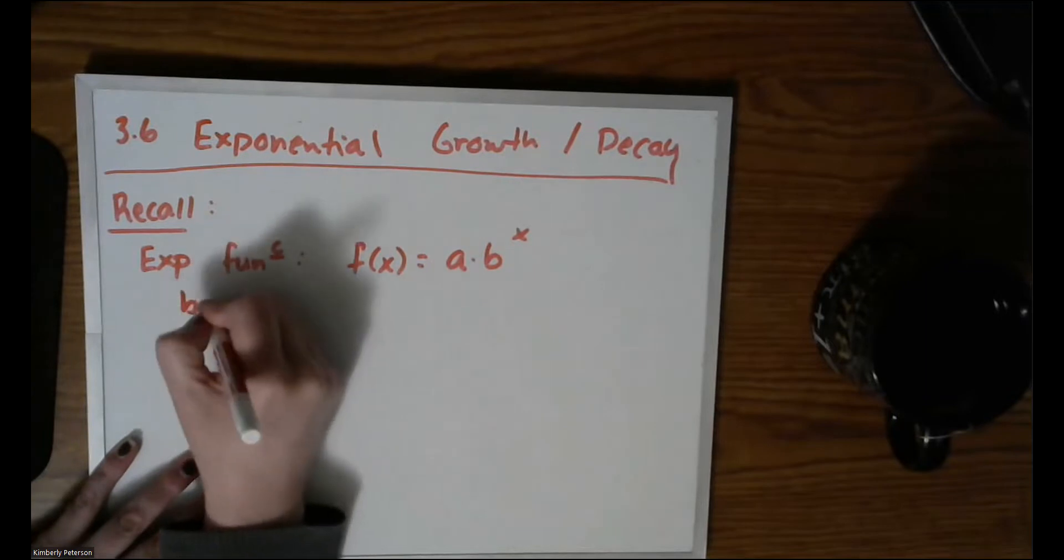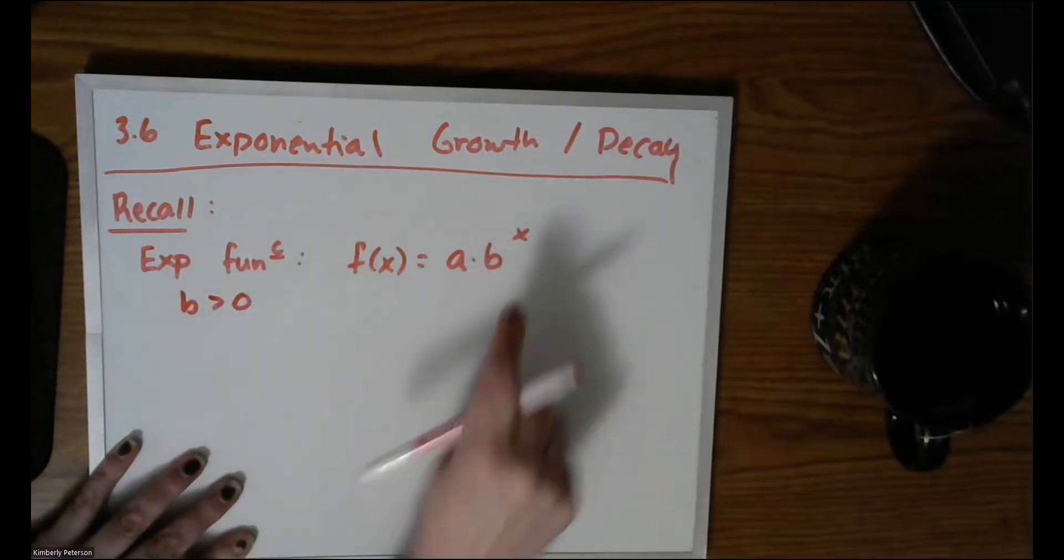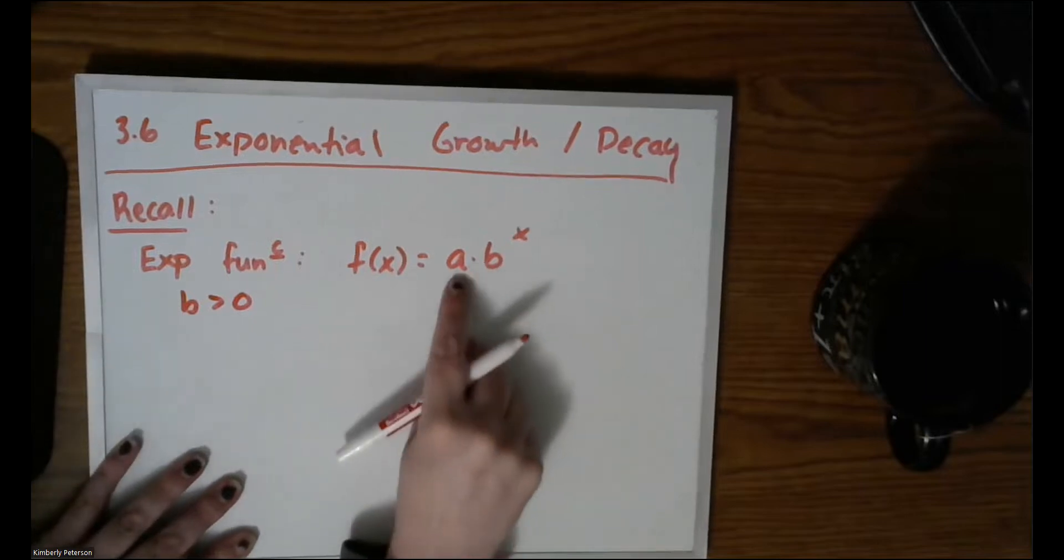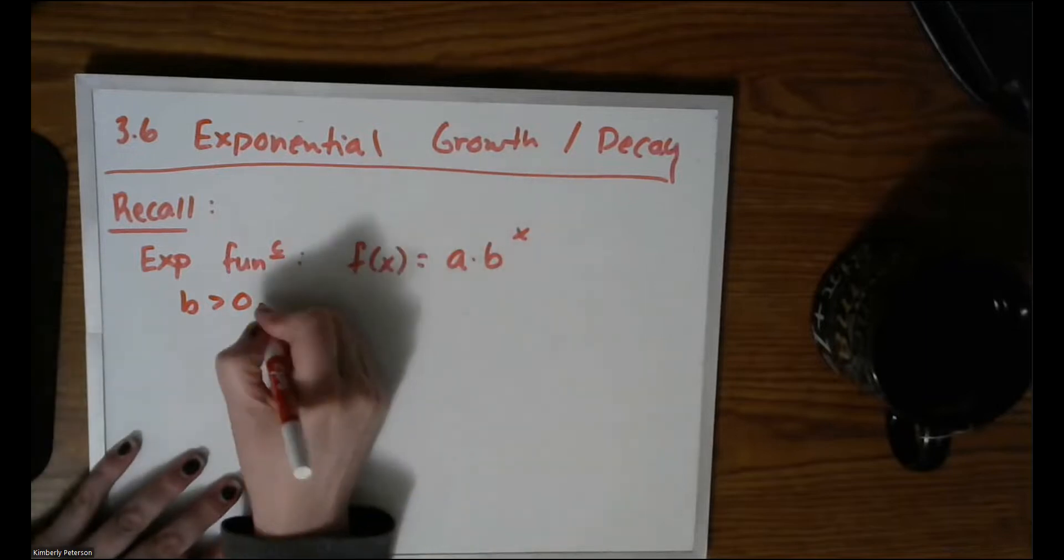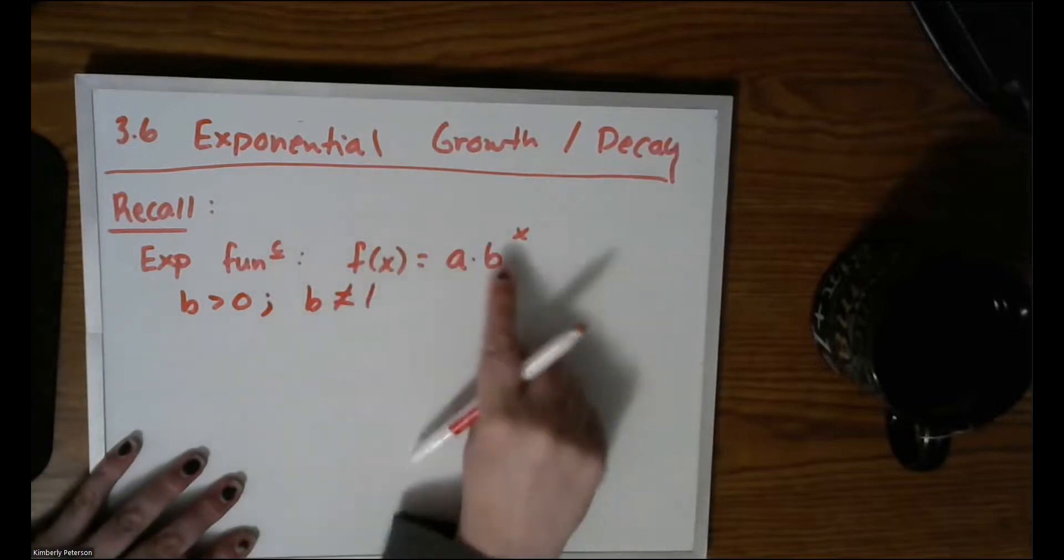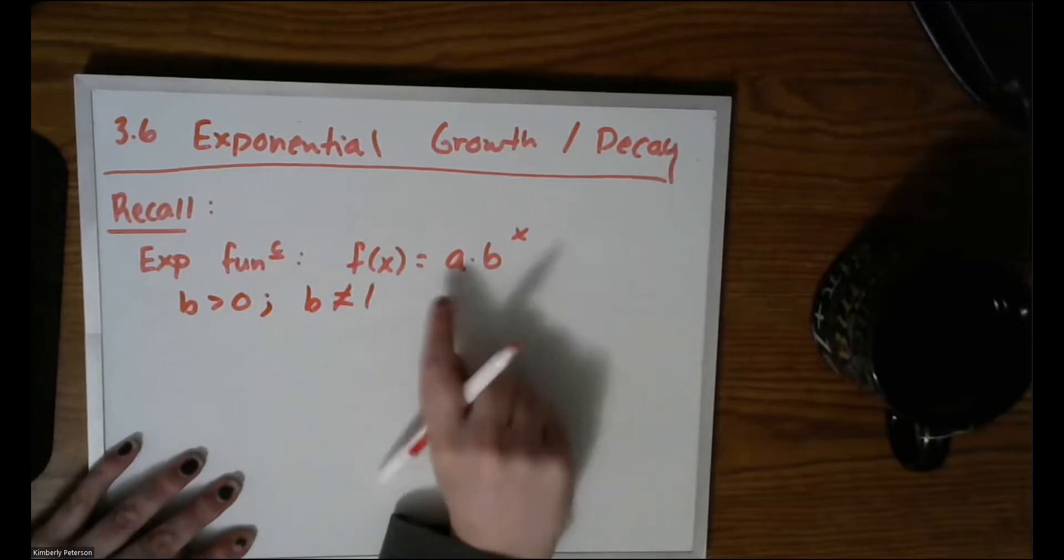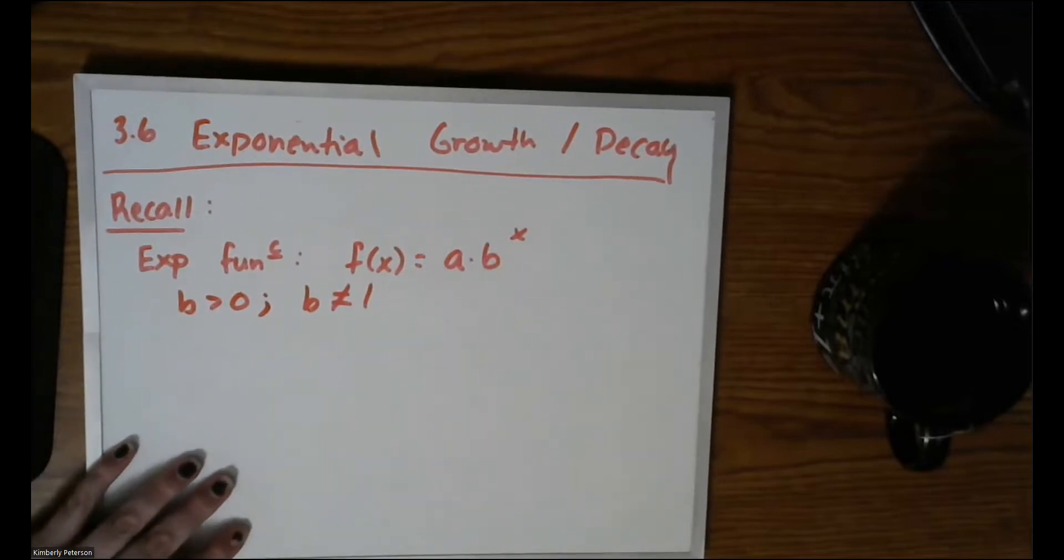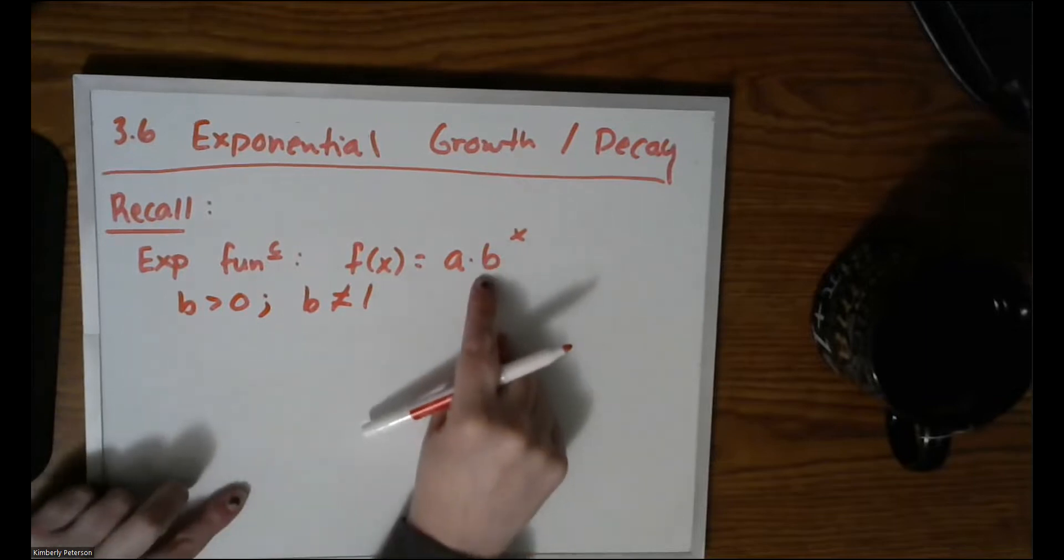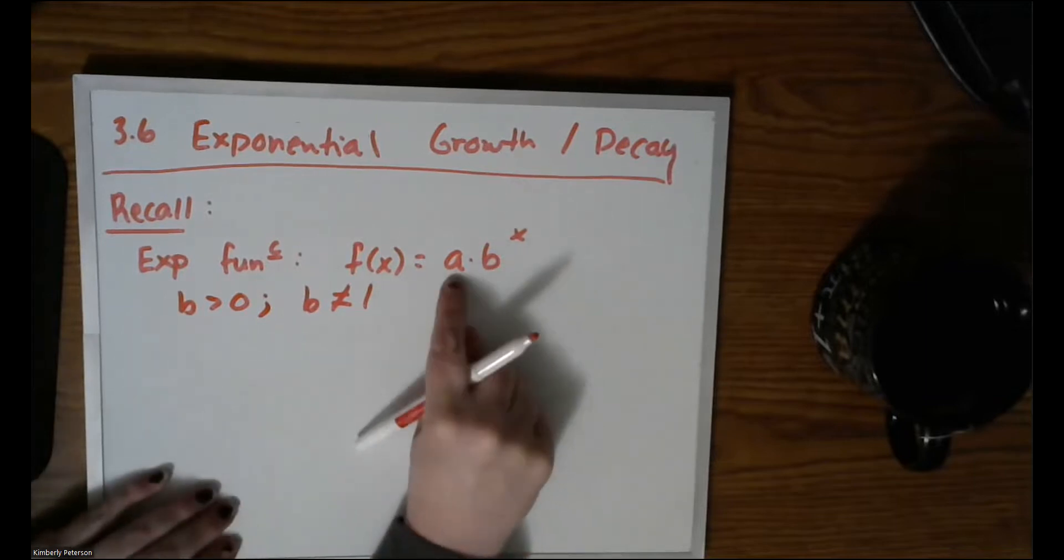These are your two parameters that will typically be given. But we do have some restrictions, so b has to be positive. We'll assume our base is positive. If it's not, it will get absorbed into the coefficient. Also, we don't want b to equal 1. If b is 1, then this is trivial - it would be a constant function.